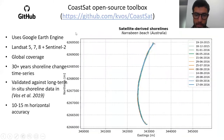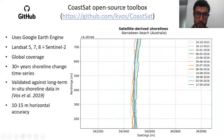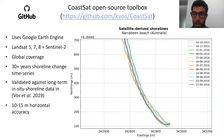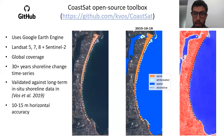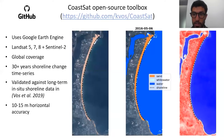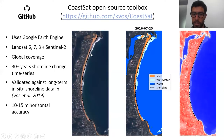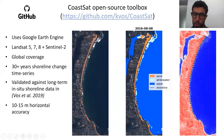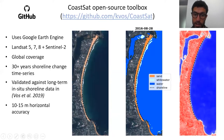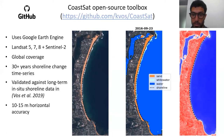COASTSAT was developed last year and it uses Google Earth Engine to access publicly available imagery over the last 30 years. We have validated this method against in-situ shoreline data, and the horizontal accuracy of the extracted shorelines is between 10 and 15 meters.